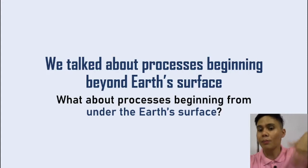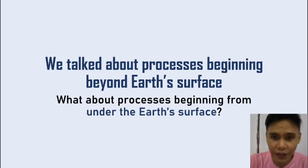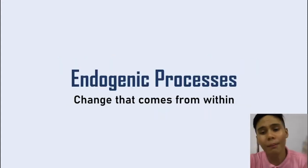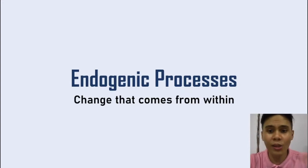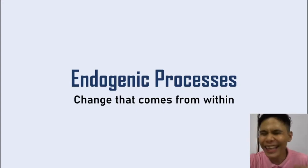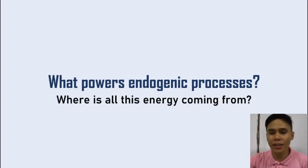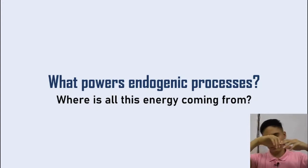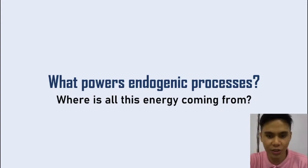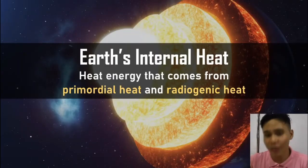We talked about processes beyond the Earth's surface. Under the Earth's surface, on the other hand, we have endogenic processes. This is change that comes from within the Earth. So, what powers endogenic processes? How can so much energy be on Earth? We already discussed this — it's Earth's internal heat.